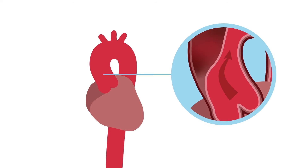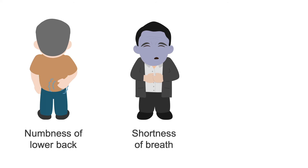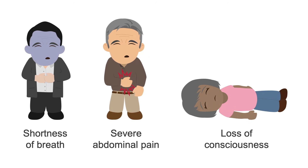Another outcome is that the dissection could progress to the level of the heart and cause a blockage or rupture there. Common symptoms of an aortic dissection include mild numbness of the lower back, shortness of breath, severe abdominal pain, and loss of consciousness.